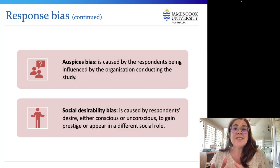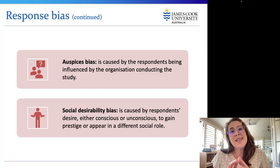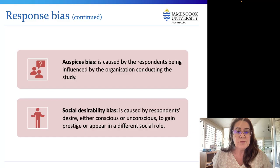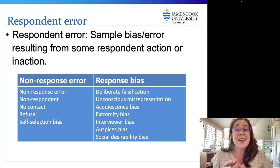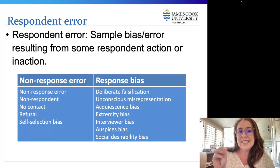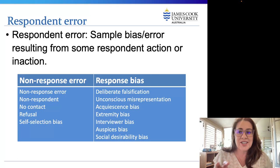Social desirability bias may occur consciously or subconsciously from the respondent. Answers to questions that seek facts or matters of public knowledge are usually quite accurate, but the interviewer's presence may increase respondents' tendency towards an inaccurate response to a sensitive question in an attempt to gain prestige in the interviewer's mind. As researchers, it's really important for us to be aware of non-response errors and response biases when constructing our survey questionnaire.